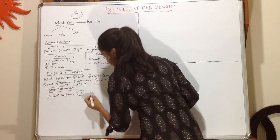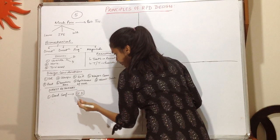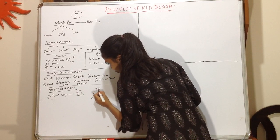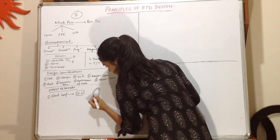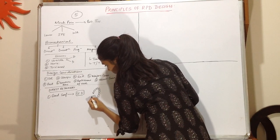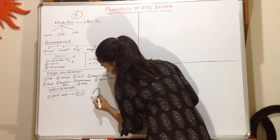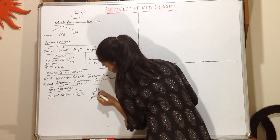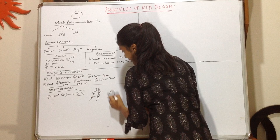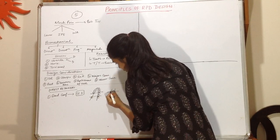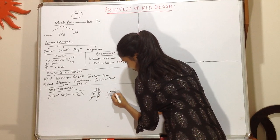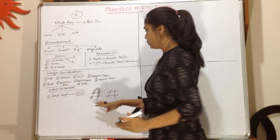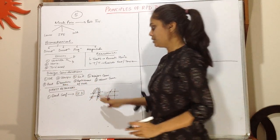In Kennedy's class 3, as we know, there is an area bounded anteriorly and posteriorly by natural teeth. In this situation, we will give the direct retainers in a quadrilateral fashion — a schematic diagram of that will look like a quadrilateral. This is the quadrilateral configuration for a class 3 situation.